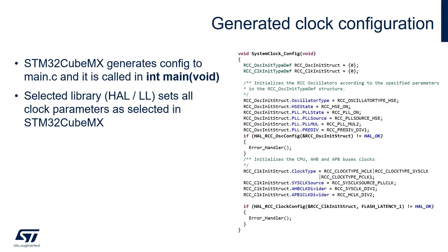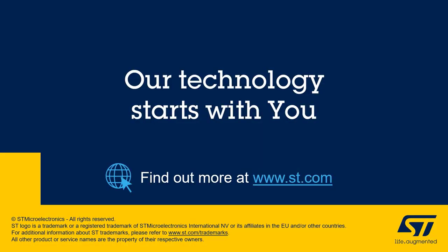At the end, once everything is set, you can generate code from CubeMX. CubeMX generates the configuration into the main.c file, which is called in the main function. If you execute the SystemClockConfig function, the HAL library sets all clock parameters as selected in the CubeMX project. Thank you for your attention.